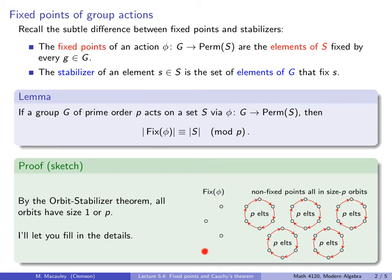It says the number of these fixed points modulo p is equivalent to the size of the set, which is the number of the total points here modulo p. And hopefully you can see why that's true just from the picture. Again I'll let you fill in the details if you want to write this up formally.